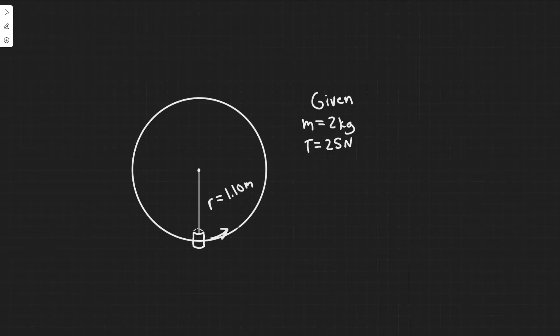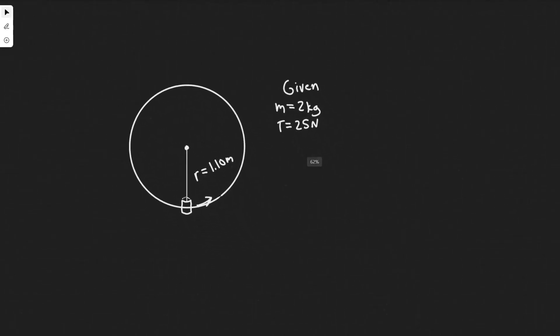So basically what we have here is we can imagine someone here swinging this bucket around in a circle. We're going to be analyzing it in two parts, one where it's at the bottom and one where it's at the top. We're given the radius, the mass, and for part A we're also given the tension. So let's go ahead and start with A.